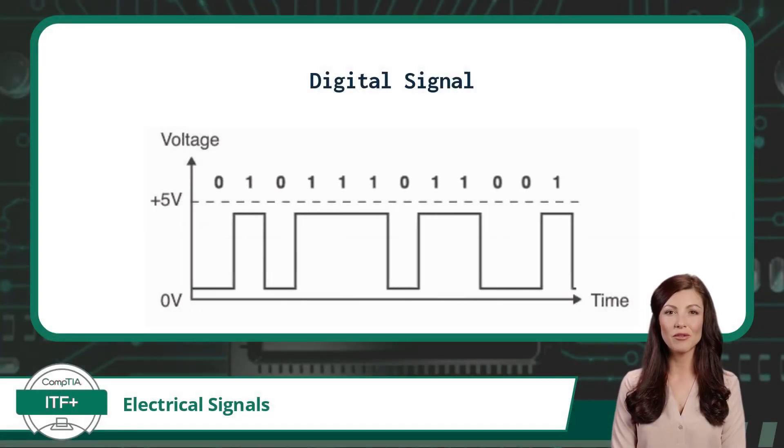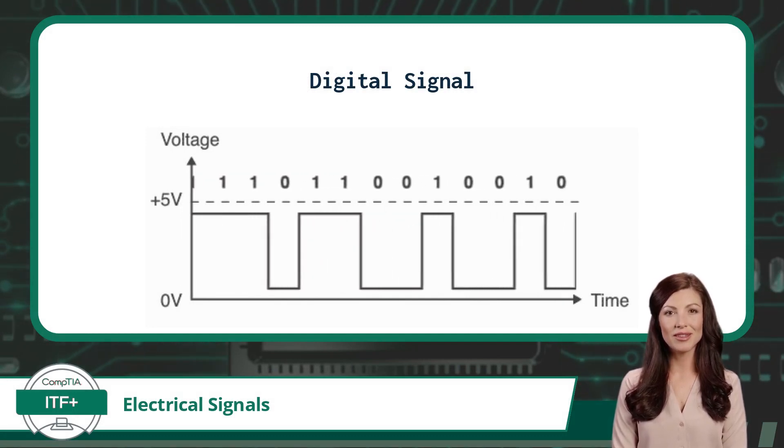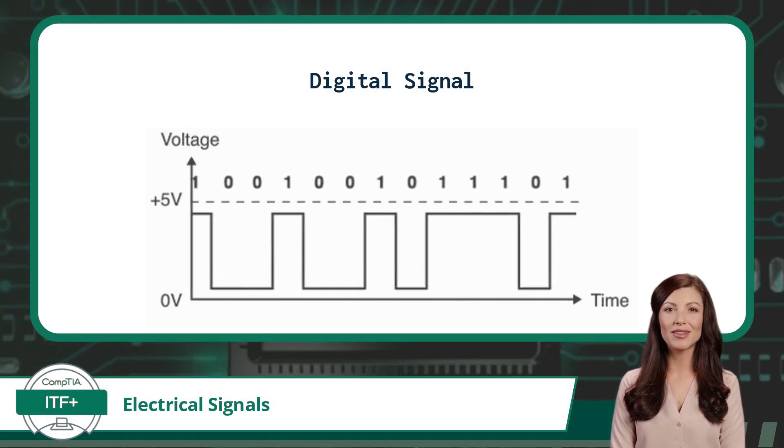Here is a visual example of a digital signal. We can see that the gradual increases and decreases in voltage are replaced with discrete values, causing the square corners you see in the signal.